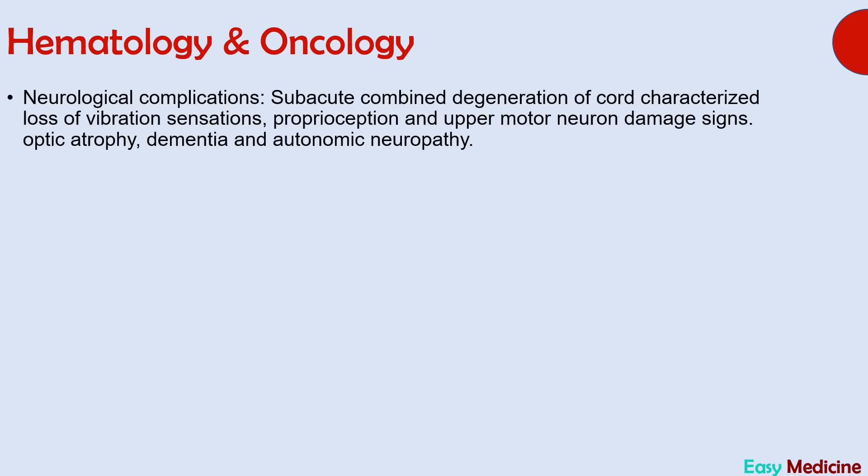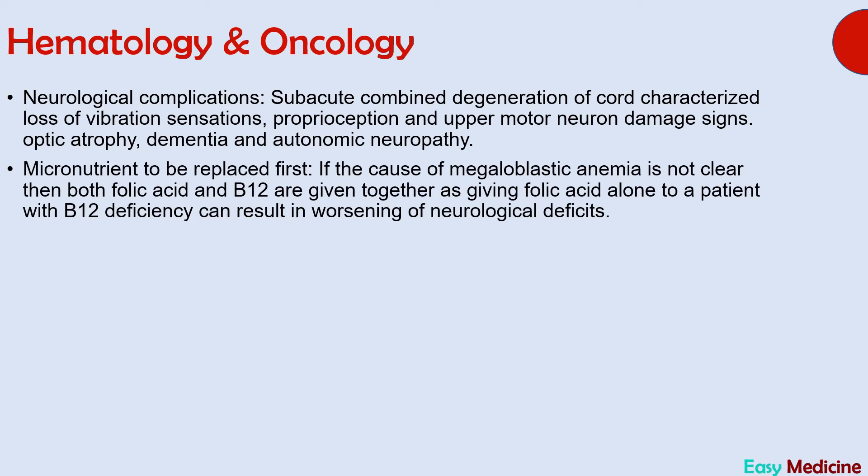Whenever neurological features are present in a patient of megaloblastic anemia, it indicates B12 deficiency. These neurological complications are collectively termed subacute combined degeneration of the cord, characterized by loss of vibration sensations, proprioception, and upper motor neuron damage signs. Other neurological complications include optic atrophy, dementia, and autonomic neuropathy. If the cause of megaloblastic anemia is not clear, both folic acid and B12 are given together, as giving folic acid alone will worsen neurological deficit.